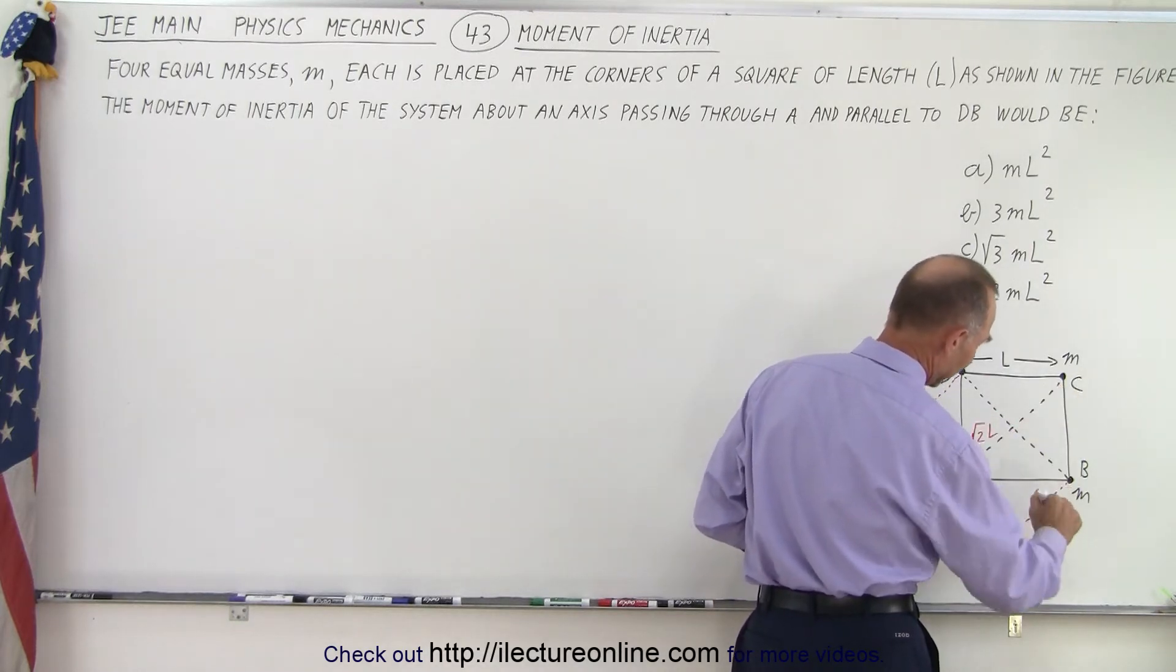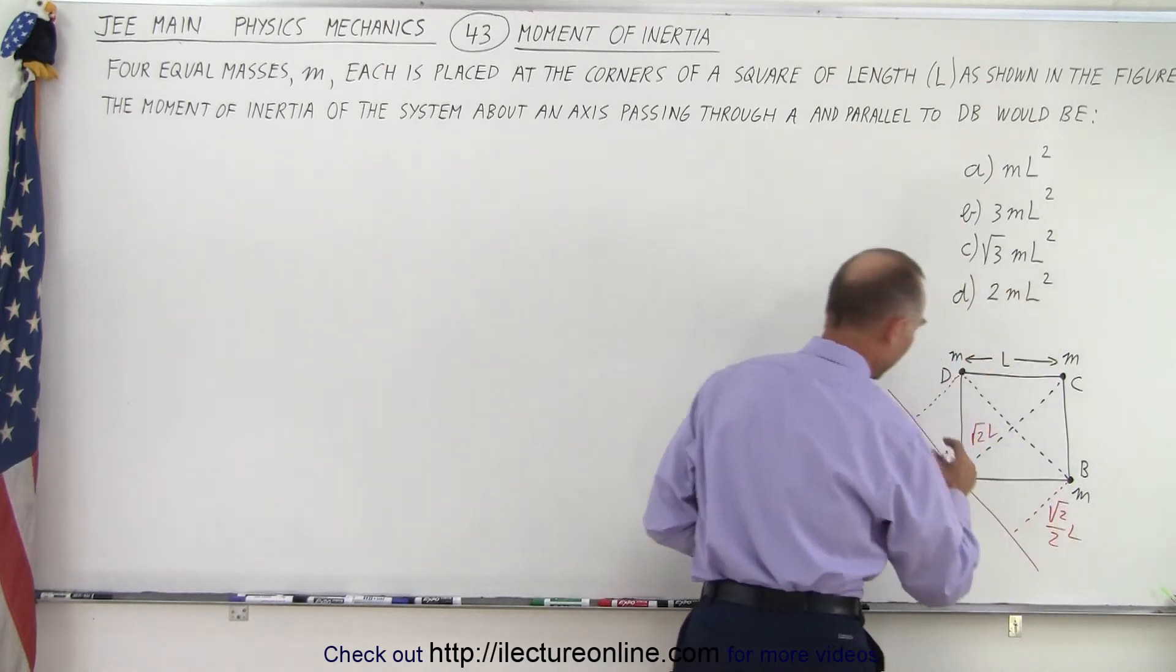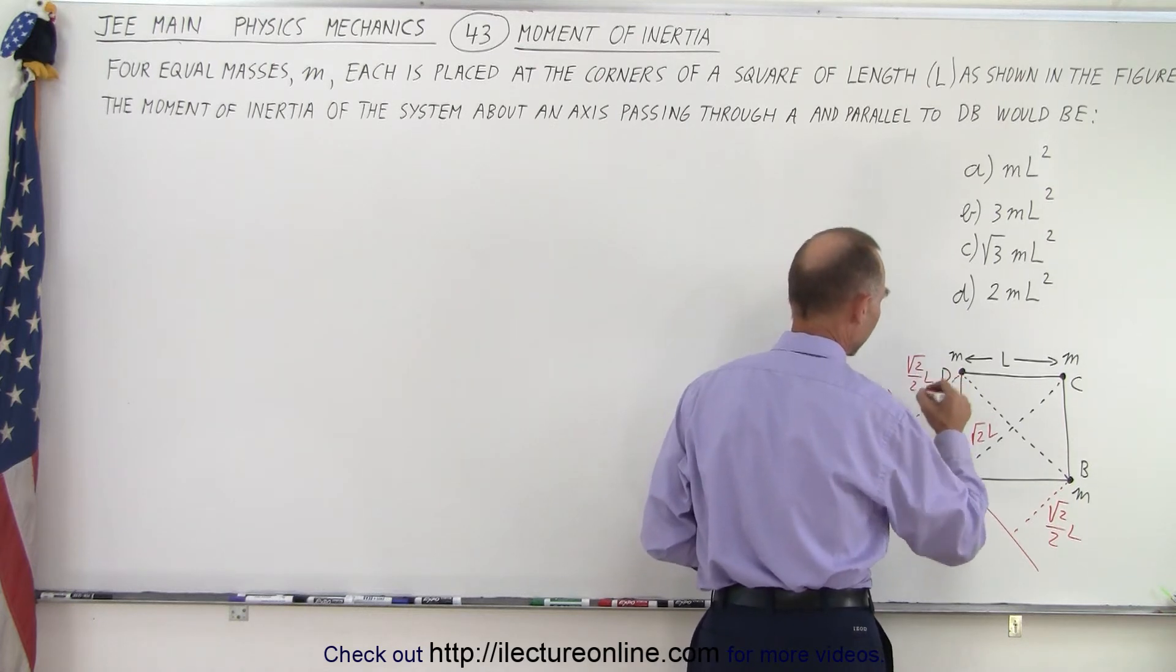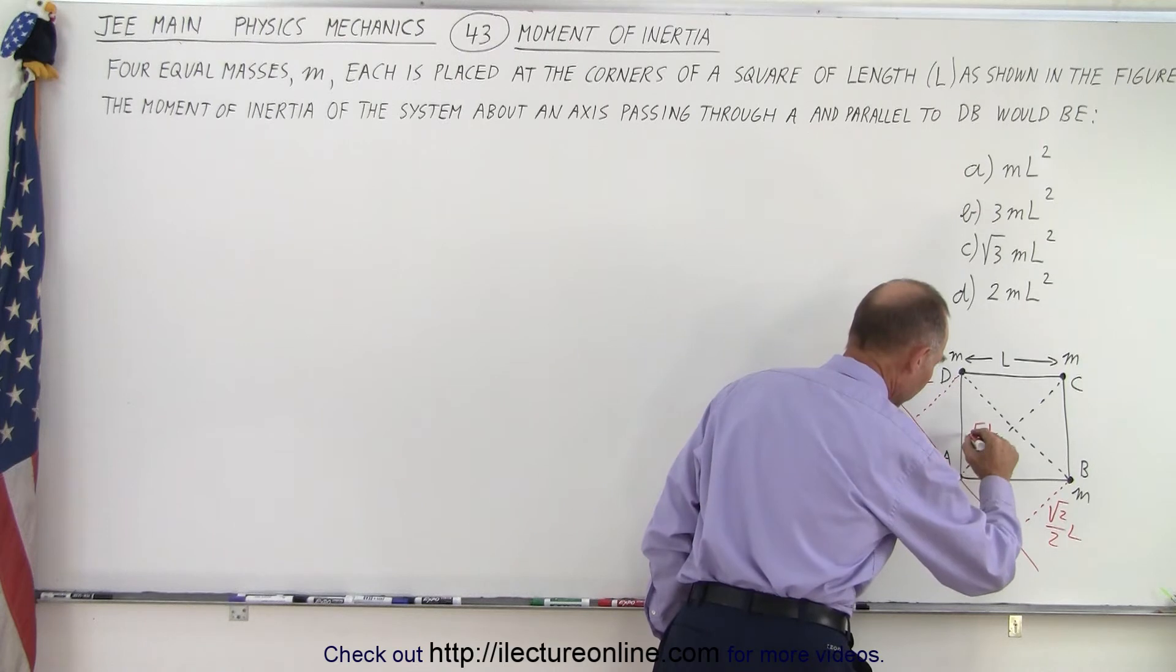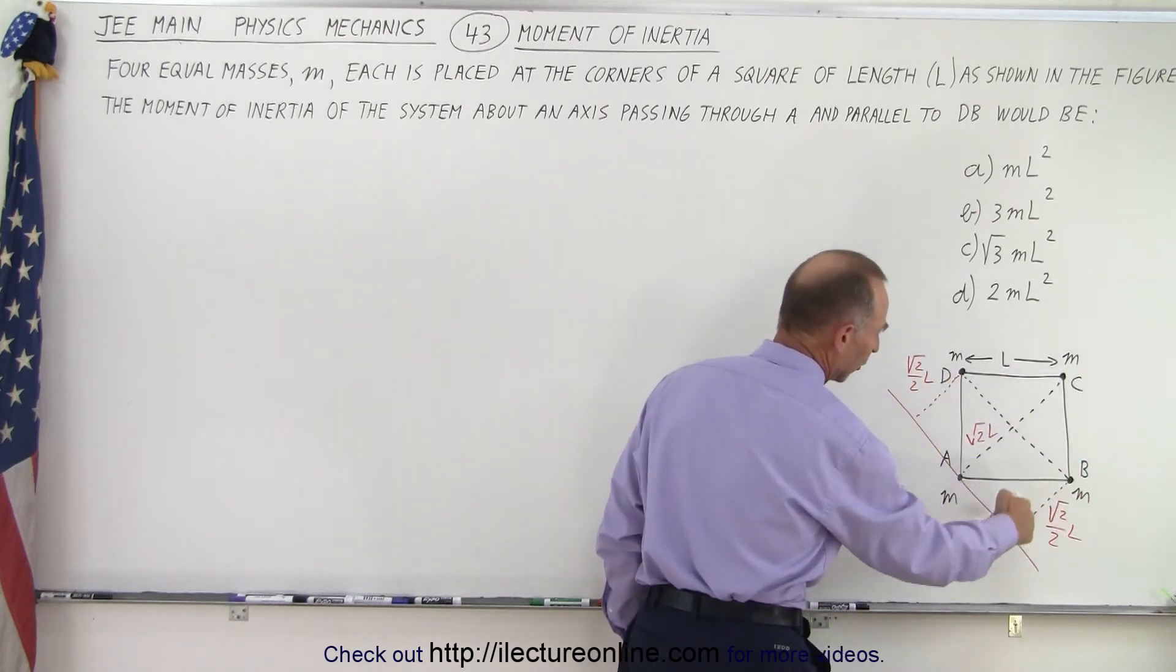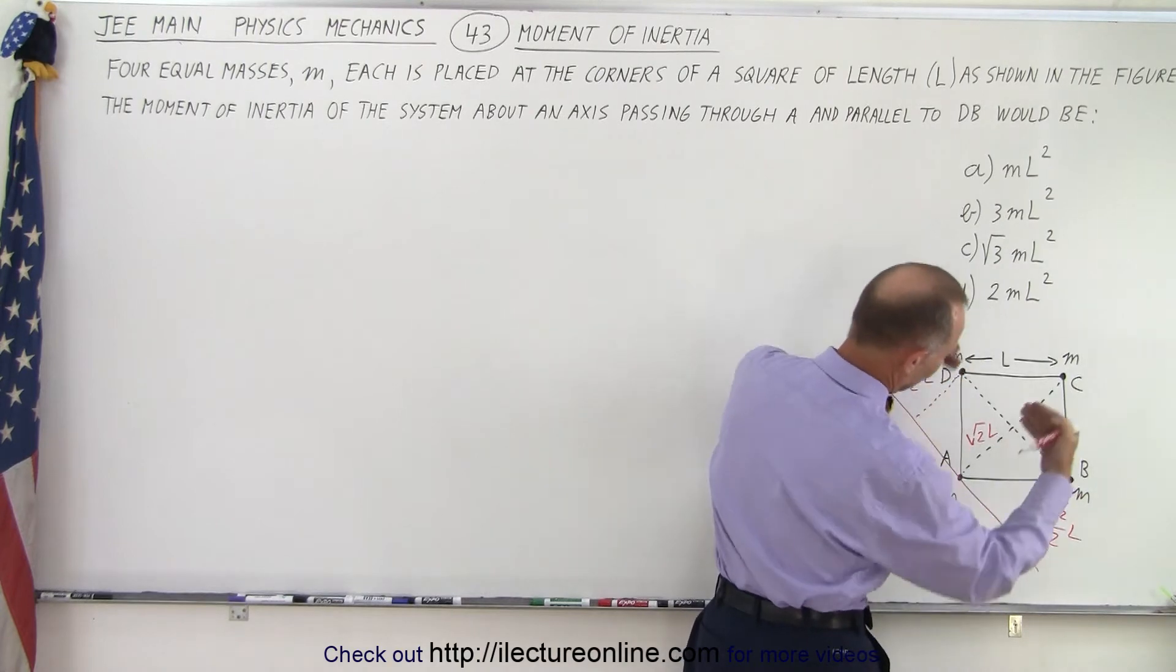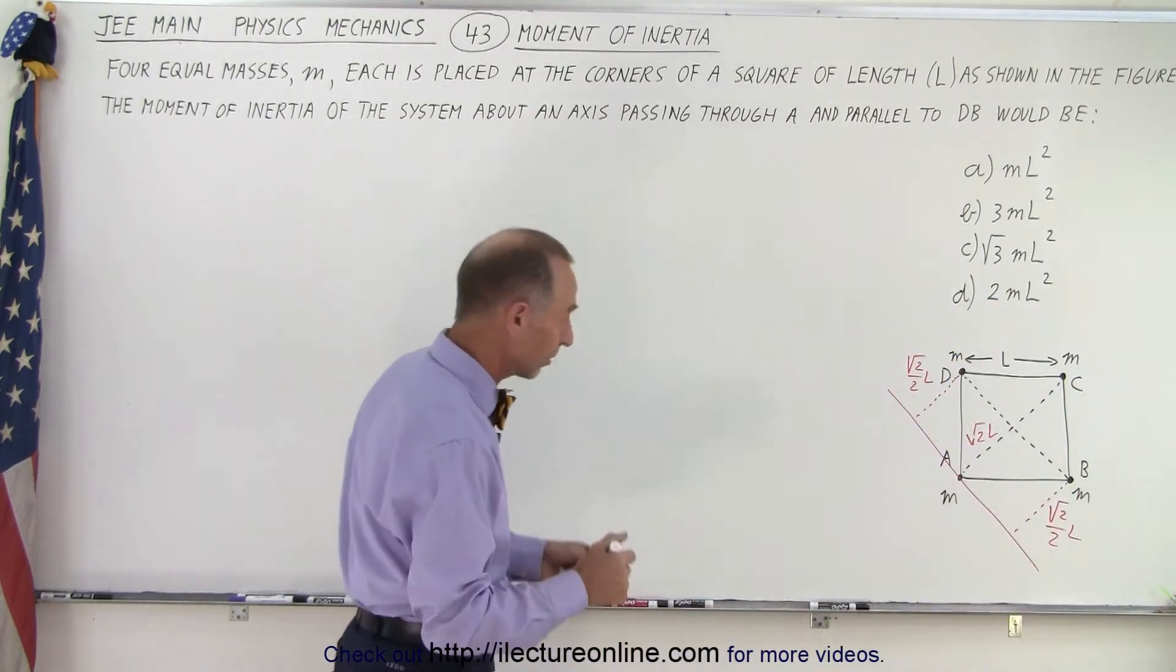This would be half that distance, so this would be the square root of 2 over 2 times L, and this would be the square root of 2 over 2 times L. So now we have the distances from each of these three masses to the axis, and now we can imagine this is going to revolve around the axis of rotation there.